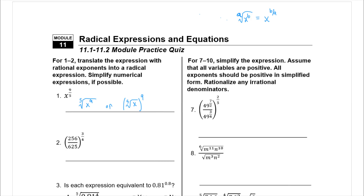On the second one, we've got numbers raised to the 3/4 power. We start by rewriting this as the fourth root of 256 over 625, raised to the third power. You could cube these and then try to find the fourth root, but that's difficult. Instead, think: is there a fourth root of 256, and is there a fourth root of 625? Both are perfect squares — 256 is 16 squared and 625 is 25 squared.